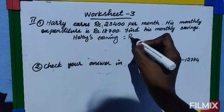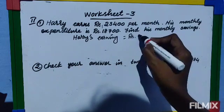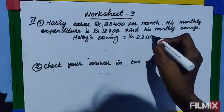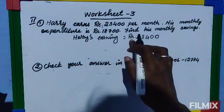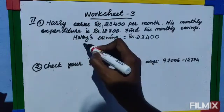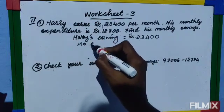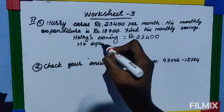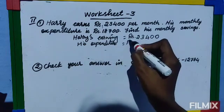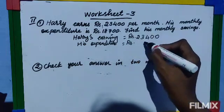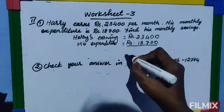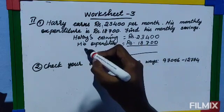When writing the statement, always write the units — whether it is rupees, liters, or meters, you must write the measurements. So Hari's earning equals rupees 23,400. His expenditure is rupees 18,700. Now you have to find his savings.